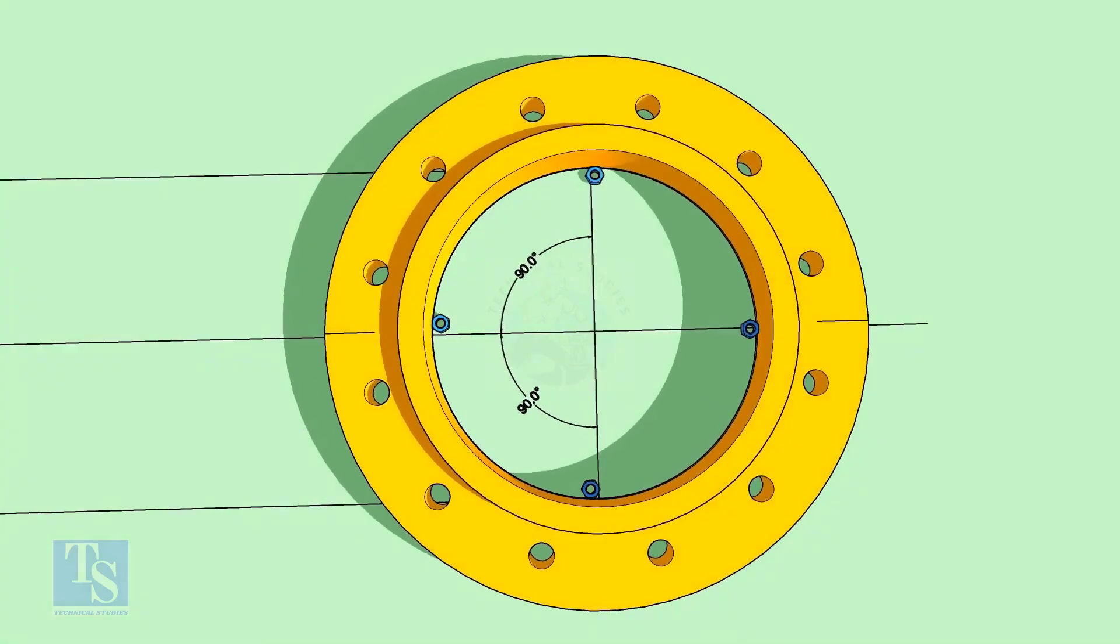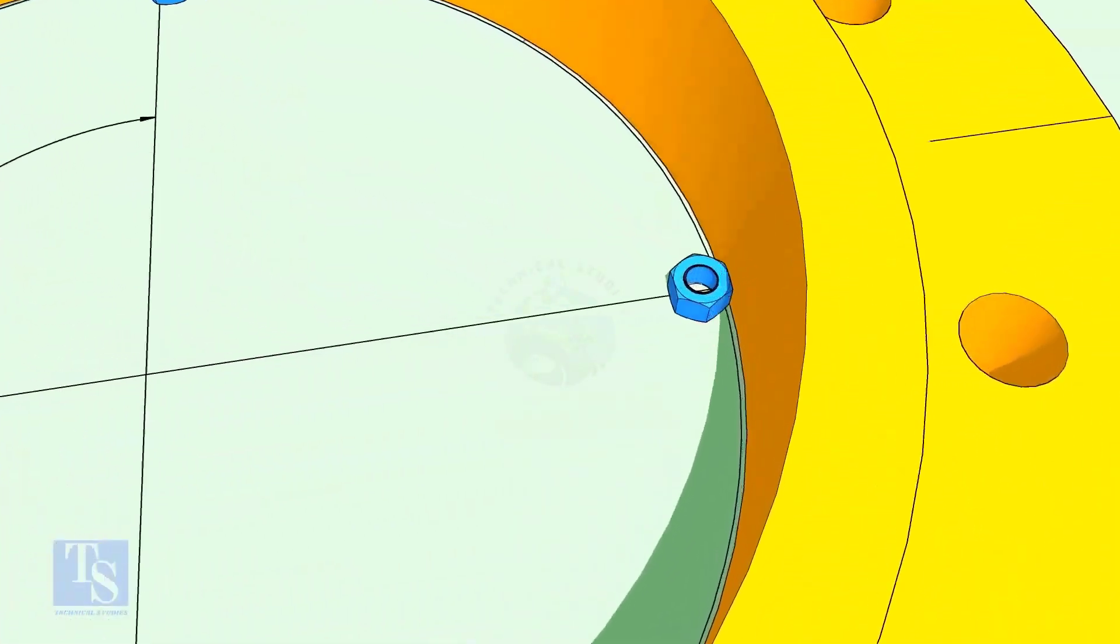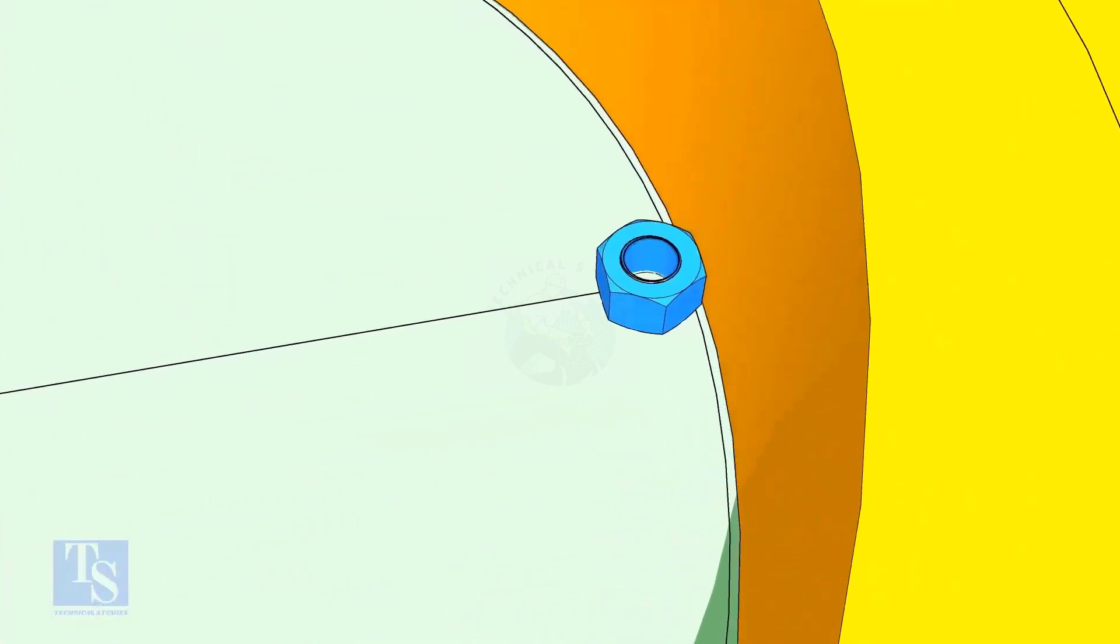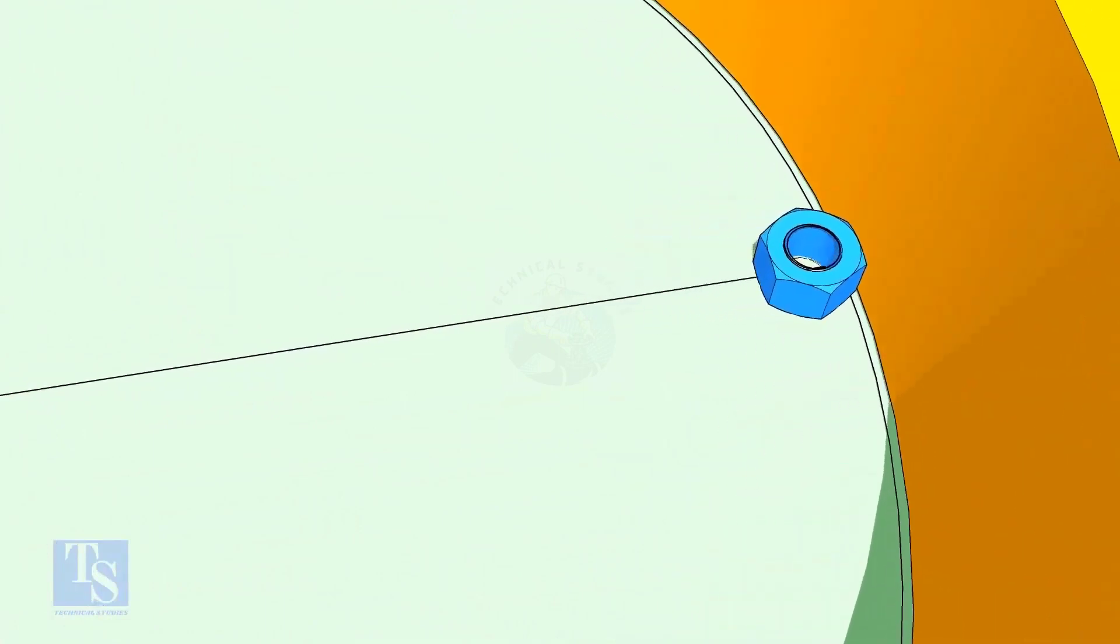Put four nuts in the flange as shown. The thickness of the nut shall be equal to the thickness of the elbow, or as per the weld size given in the drawing.